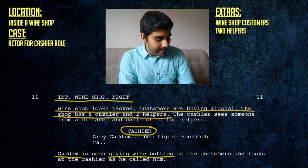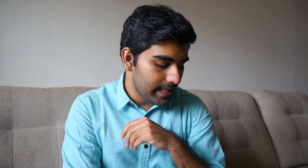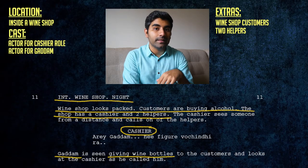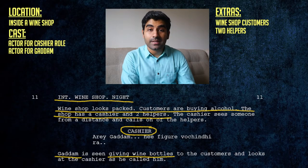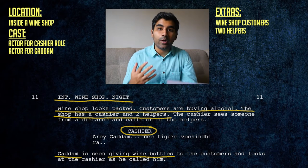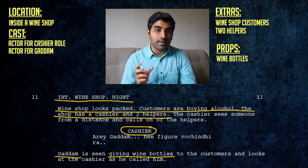Gaddam is seen giving wine bottles to the customers and looks at the cashier as he calls him. Gaddam is another character introduced in the scene, so we need the actor playing Gaddam — that comes under cast. We also have to note a category of props; in this case the props are wine bottles.